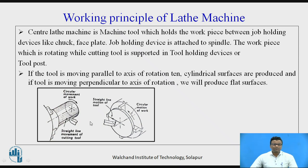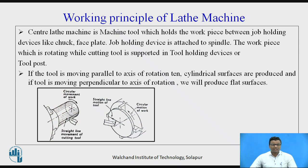As you can see in the diagram, the lathe machine is a machine tool which consists of a workpiece — mainly the cylindrical type of workpiece — that can be used in the lathe machine. These workpieces are held in job holding devices. There may be different job holding devices like the centers — the live center and dead center — also types of chucks, face plate, angle plate, driving plate, lathe carrier, and mandrels. These components are called job holding devices.